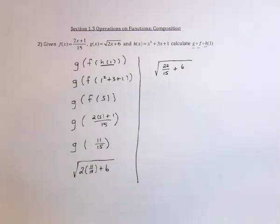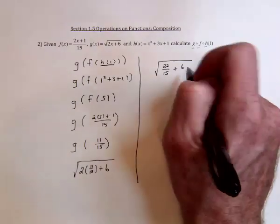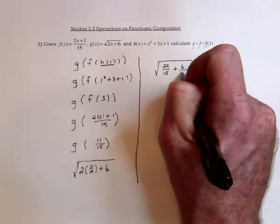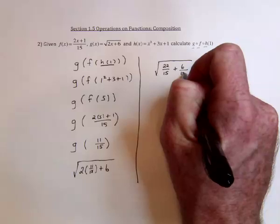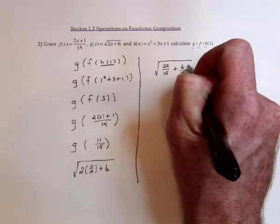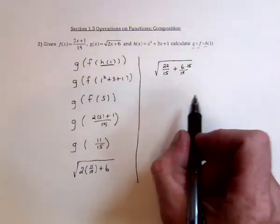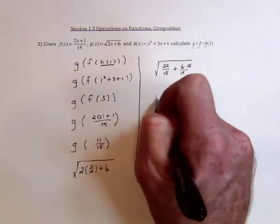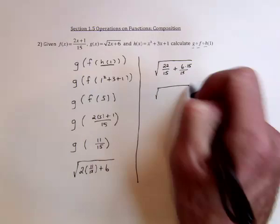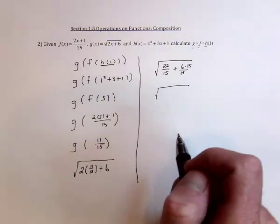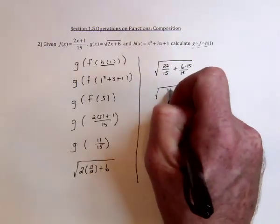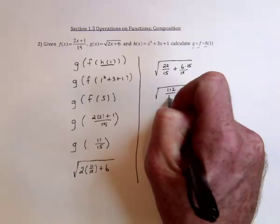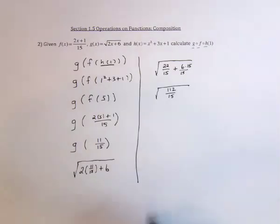Now I'll get a common denominator, which will be 15. So multiply the 6 on the bottom and the top by 15, which is going to be 90. So 90 and 22 is 112, giving us 112 fifteenths.